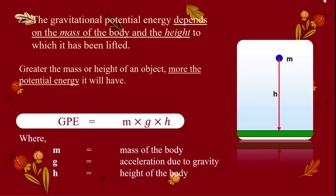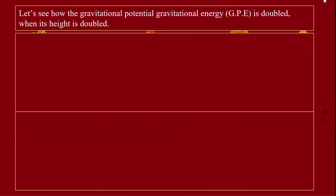The gravitational potential energy (GPE) is given by the formula: GPE = m × g × h, where m is the mass of the body, g is the acceleration due to gravity, and h is the height of the body.